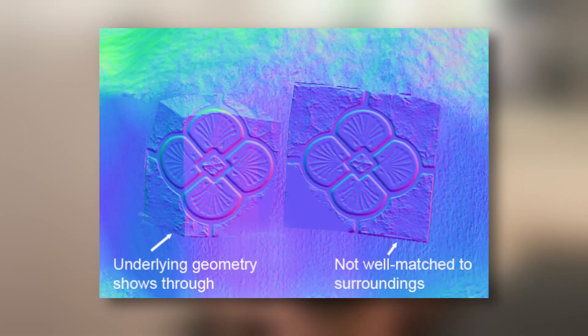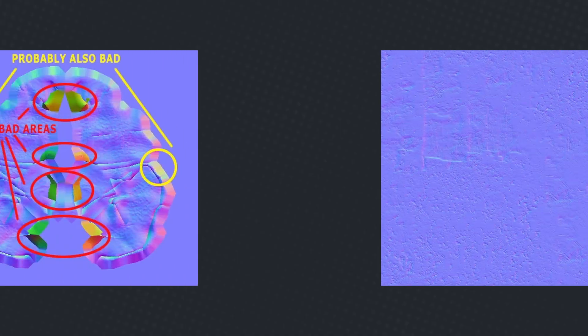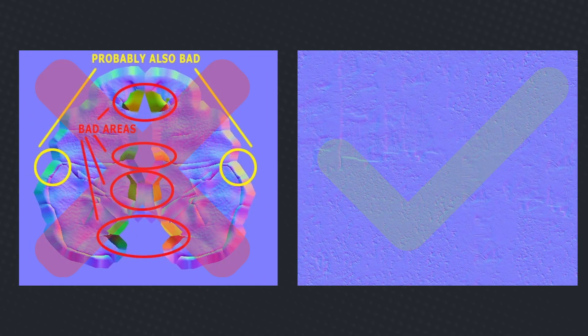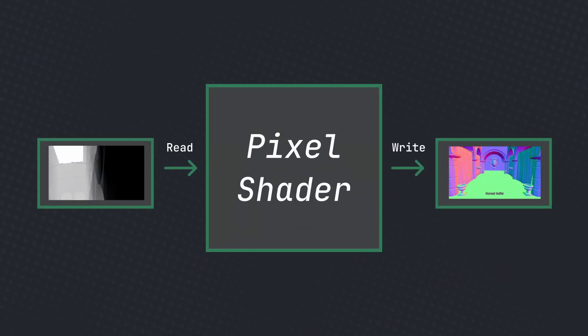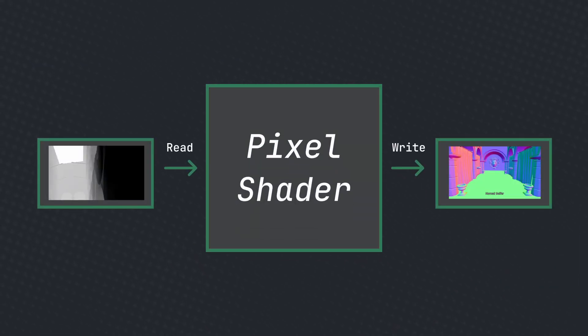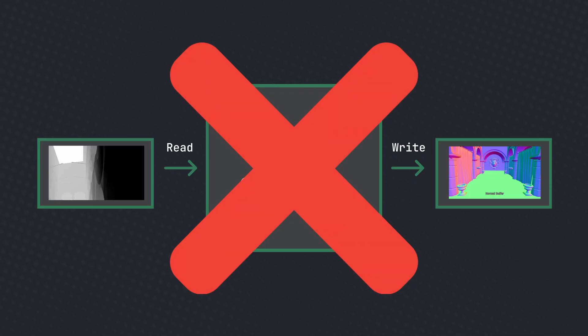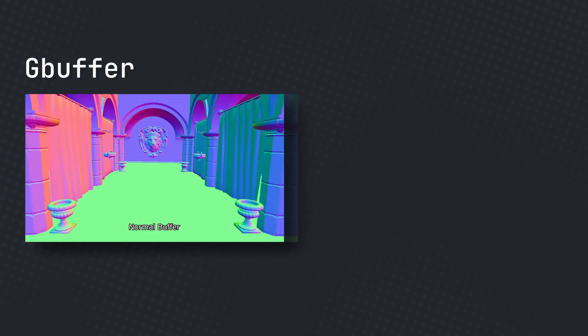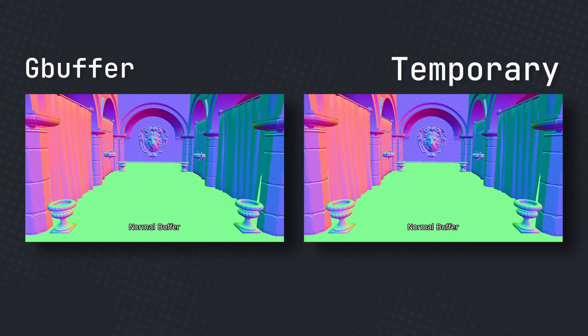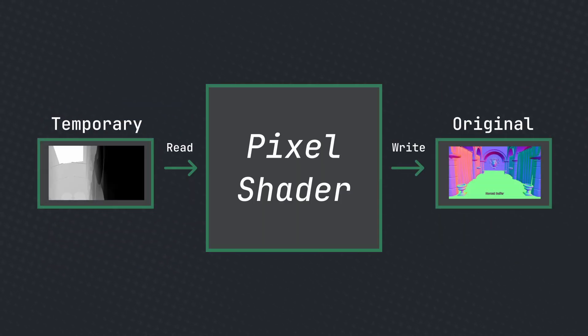Modifying normals might sound pretty simple, but spoilers — it kind of isn't. Normally, we just read from the normal buffer and write to it. But in graphics, reading and writing to the same texture is a big no-no. There are two main ways to get around this. We can brute-force by copying the entire normal buffer into a different texture and then using that texture — and that works, but we're still missing two main components.